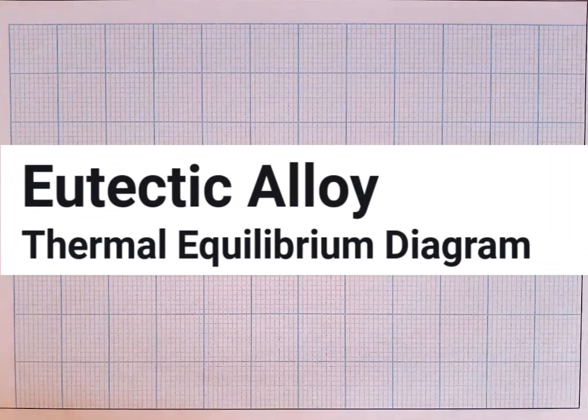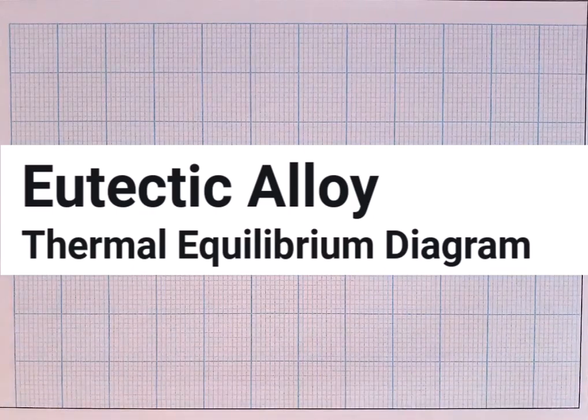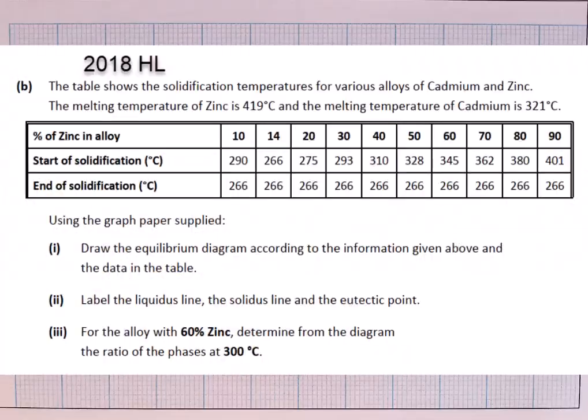In this video I'm going to be looking at a eutectic alloy thermal equilibrium diagram, specifically this diagram from the 2018 higher level question 4. Now the first thing I want you to notice is this is a cadmium zinc alloy diagram which is the most common one that you will see on the leaving cert and you can always tell if it's a eutectic alloy because the end of solidification temperature is always the same as it goes across.